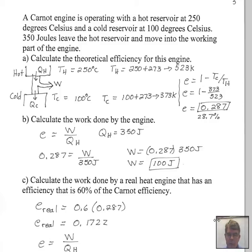Then we'll calculate the work done by the engine, and then we'll switch to a real heat engine and take a look at its efficiency and work done. This particular Carnot engine, an ideal engine that's our best possible heat engine, has a hot reservoir at 250 degrees Celsius and a cold reservoir at 100 degrees Celsius.